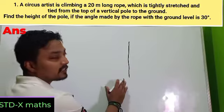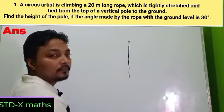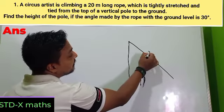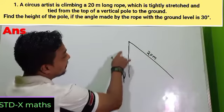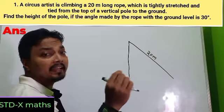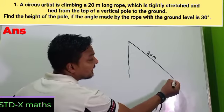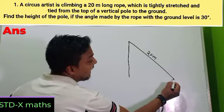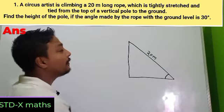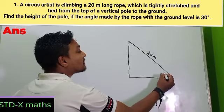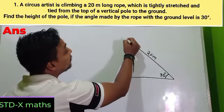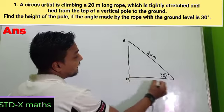With the top of the pole, one rope is fixed. The length of the rope is 20 meters. This rope is perfectly tightly fixed. Here it is given that the angle of inclination with the ground is 30 degrees, and you are asked to find out the height of the pole. Let me name: A is the top, B is the foot of the pole, C is where the rope meets the ground.